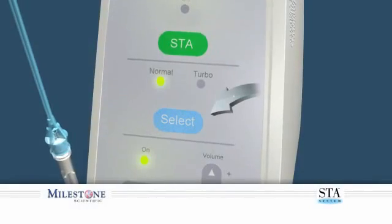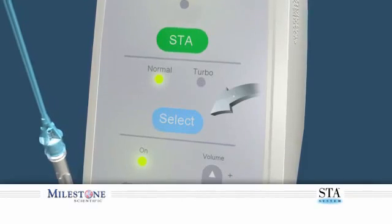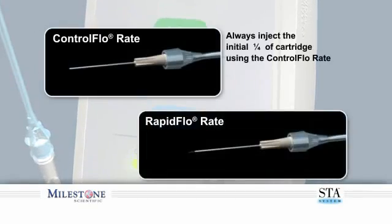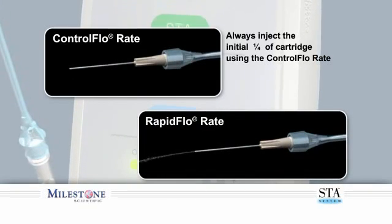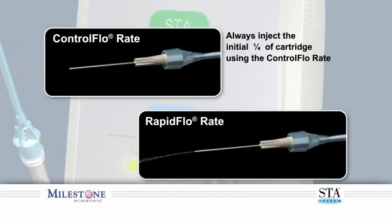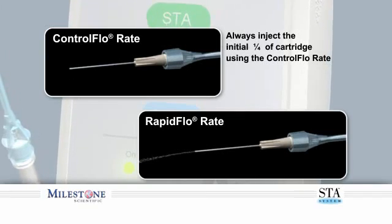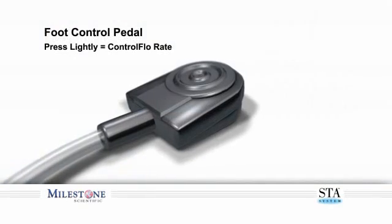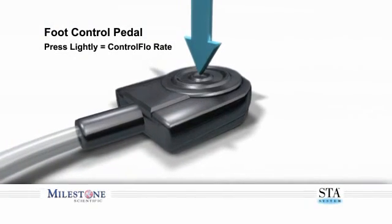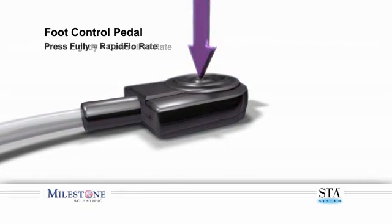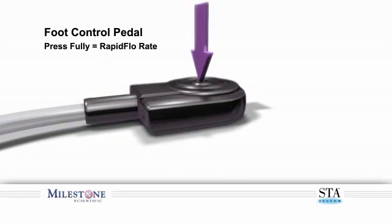Set the STA system to the normal mode, which allows the STA system to function with two distinct flow rates: the control flow and the rapid flow rate. We recommend using the control flow rate for the first quarter of the cartridge for all initial phases of infiltration and block injections. Depressing the foot control pedal lightly allows you to enter the control flow rate, and fully depressing it allows you to enter the rapid flow rate. There is a corresponding beeping tone to distinguish these two rates.